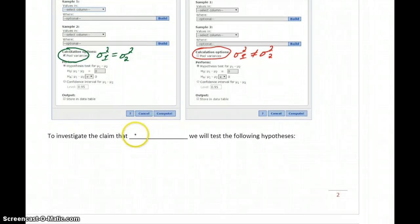To investigate the claim that the two population variances are equal, we'll test the null hypothesis that the ratio of our two variances is equal to 1, and the alternative hypothesis that the ratio of those two variances is different from 1.